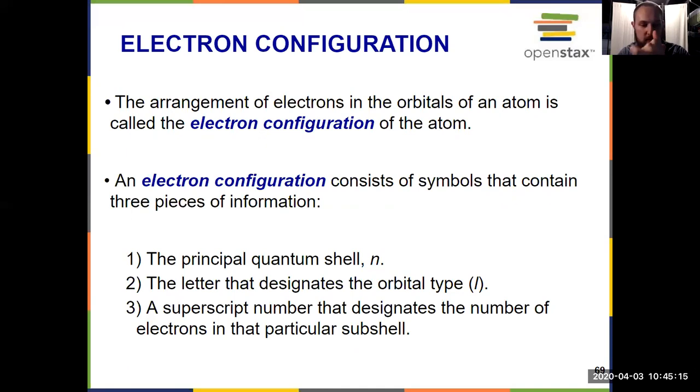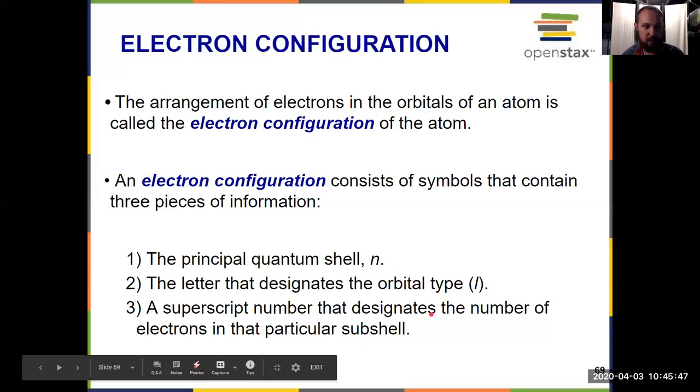But that brings us to electron configurations. We use this phenomena, an electron configuration, to describe the arrangement of electrons in orbitals with a nice abbreviated configuration, an easy, quick way to describe it. And we do that with a series of symbols that give us three pieces of information. It tells us the principal quantum number, it tells us the value of L, the orbital type. So it tells us N, it tells us L, and it tells us the number of electrons that are within that subshell.